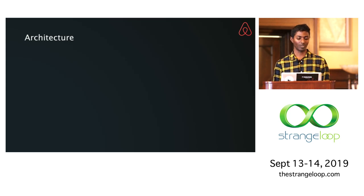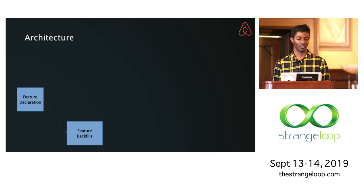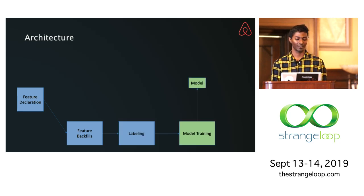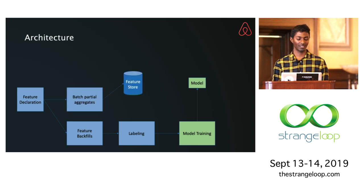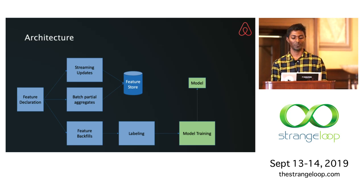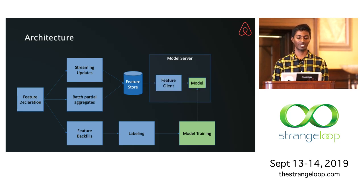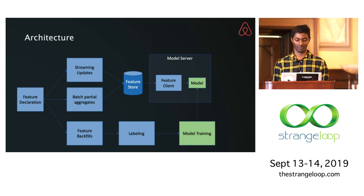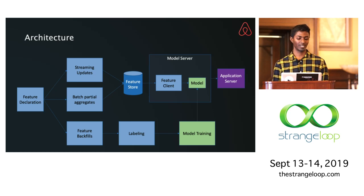The architecture: so far we've looked at how we go from feature declaration to a feature backfill, which feeds into model training. The next part is creating the serving store, or feature store. We compute batch aggregates and streaming updates and put both together in a feature store. This all comes together in a model server — a model server with a feature client that talks to the model and spits out predictions. This is all happening in Big Head, and what users see is just an endpoint that talks to the application server. This is what I mean by declaration: just one or a few declarations produce these pipelines for all users across the company.